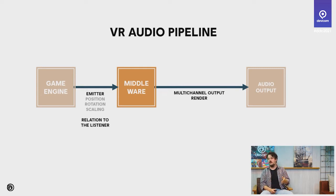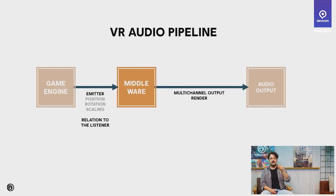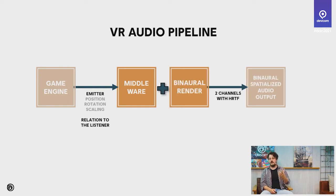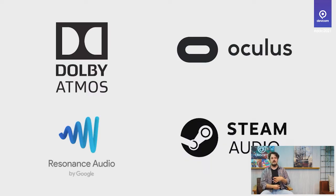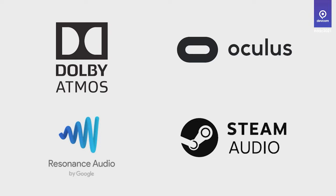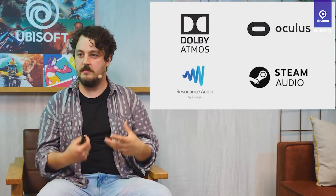Here's a glimpse of the VR audio pipeline. On the left-hand side is our game engine — any engine with emitter position, rotation, and scaling concepts. All that information we put into our middleware, Wwise. We can then render these into multi-channel outputs for the listener. For our VR games, we use a binaural renderer which outputs two-channel sound with HRTF, giving you 3D audio. Companies providing these solutions include Dolby Atmos, Oculus, Resonance Audio, and Steam Audio — all using these concepts in one way or another.